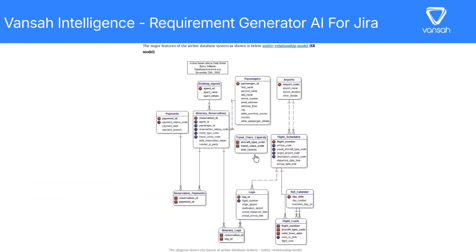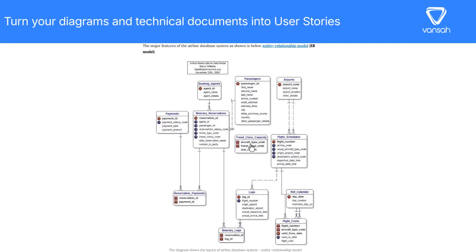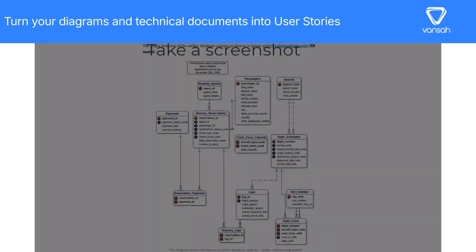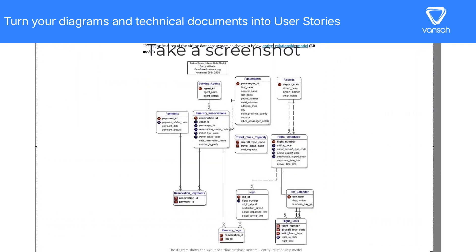Planning software requirements can be time-consuming, especially when you're working from technical diagrams like ERDs. With Vansa Intelligence Requirements Generator, you can turn these diagrams into structured, ready-to-use user stories with just a few clicks. Let's say we have this ER diagram outlining our database structure. All we need to do is take a screenshot or upload the image directly into Vansa Intelligence.